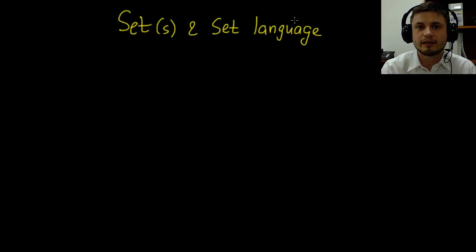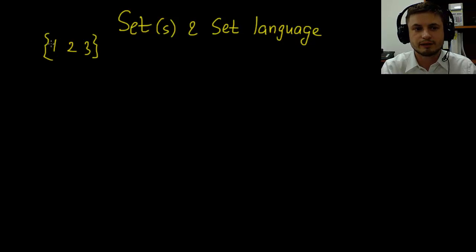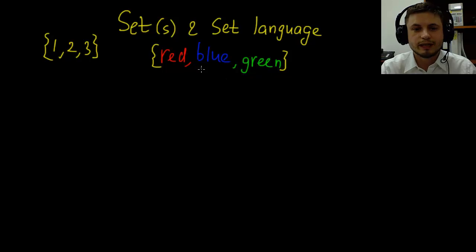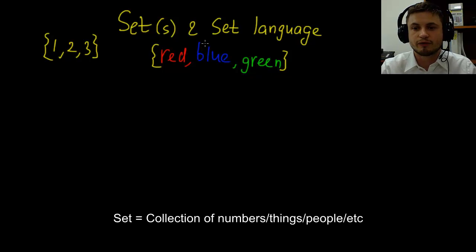This is all about sets and set language. What is a set? Essentially you can think of it as a collection of things. For example, you have number one, two, and three, and together it's a collection we call a set, usually represented by these brackets called braces. They don't have to be numbers, they can be anything. For example, it can be colors. Here's an example of three different colors in a set: red, blue, and green.